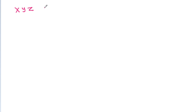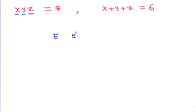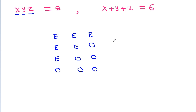So we get xyz equals 8 and x plus y plus z equals 6. Now, x, y, z can be: all even; any two even and one odd; one even and two odd; or all odd. Since x plus y plus z equals 6, which is even, two even and one odd is not possible, and three odd is also not possible. So either all three are even, or one is even and two are odd.